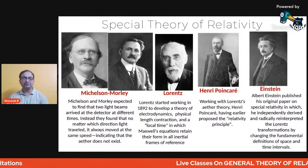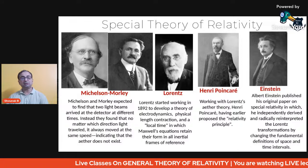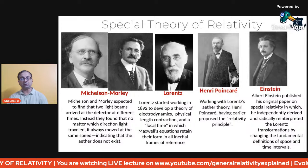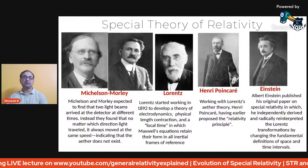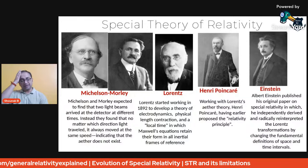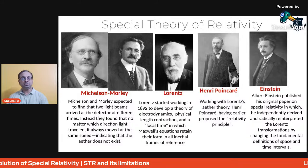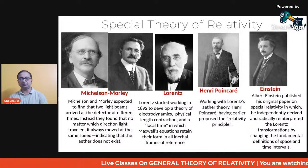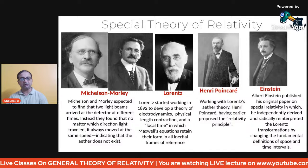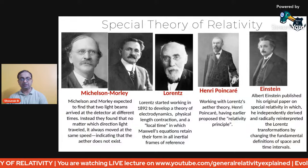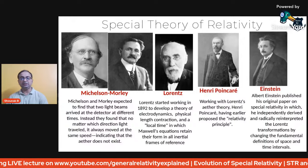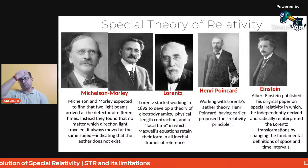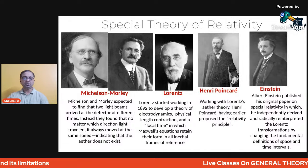Lorentz started working to develop a theory of electrodynamics. Before Lorentz, the French mathematician and physicist Henri Poincaré had formed what is called the Poincaré group, which is similar to the Lorentz transformation but predated it. History doesn't always credit the original creator — Poincaré's work was not accepted. It was Lorentz who formalized it, and later Einstein independently derived and radically reinterpreted the Lorentz transformation in terms of definitions of space and time intervals.